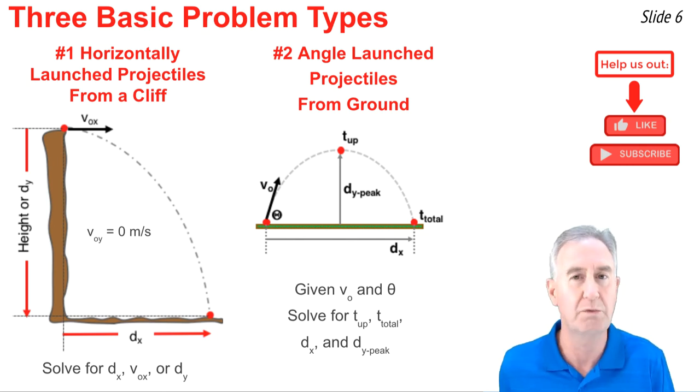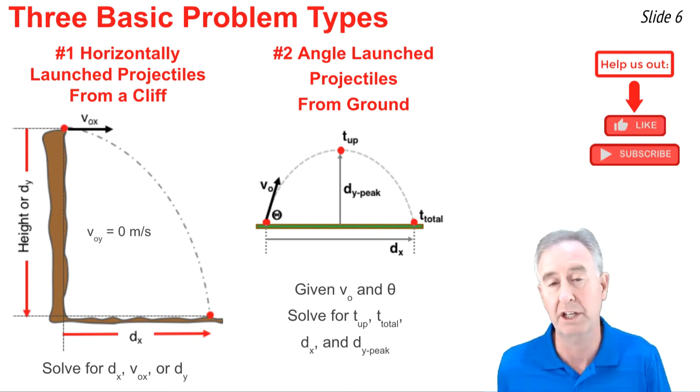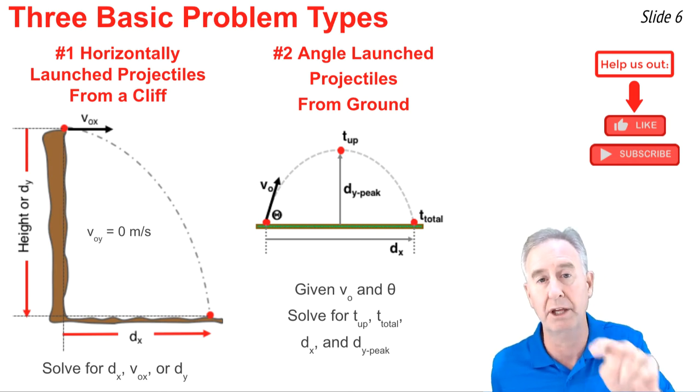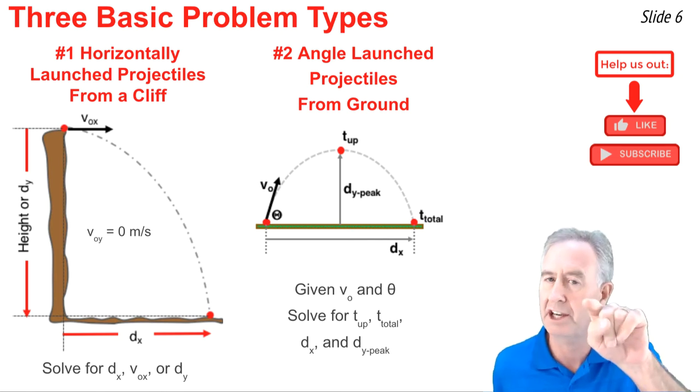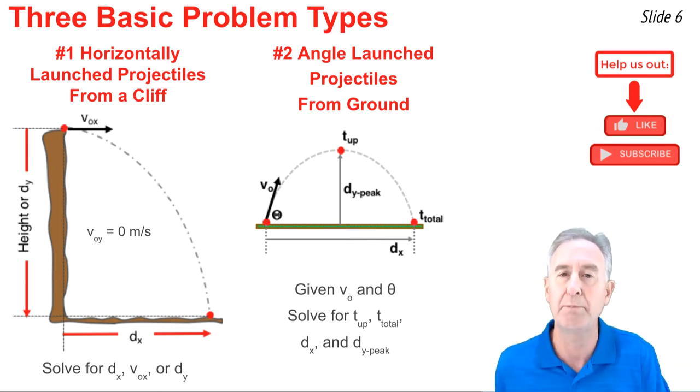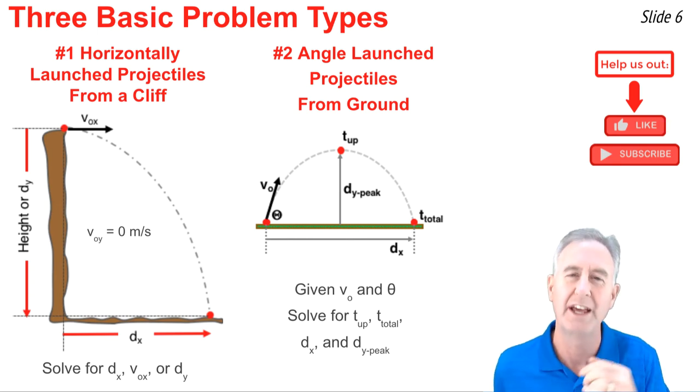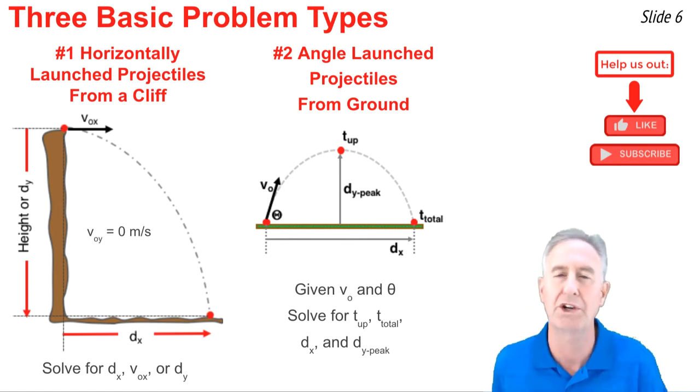Once done, you typically have to do four calculations. You have to calculate the time it takes the projectile to get up to the peak. You have to figure out the time up and down. You have to figure out how high the projectile is at its highest point. That's the dy at the midway through the trajectory position. And the last thing is you have to find the total horizontal displacement.